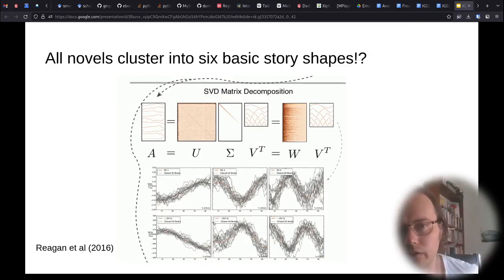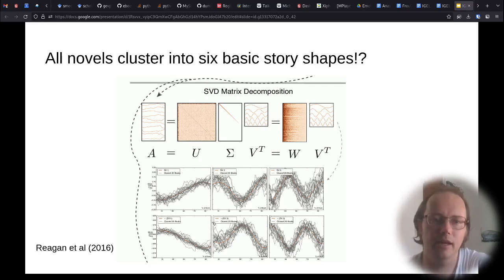Zooming in on the singular value decomposition as one possible way of identifying universal plot shapes. The singular value decomposition factorizes the signal into several components and as you can see in the bottom we get shapes similar to the six universal plot shapes suggested by Kurt Vonnegut and to a more or lesser extent the books used as inputs fit these patterns.